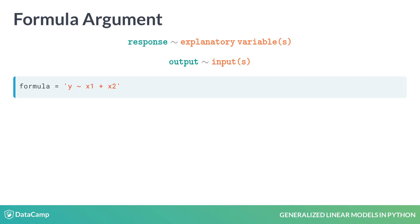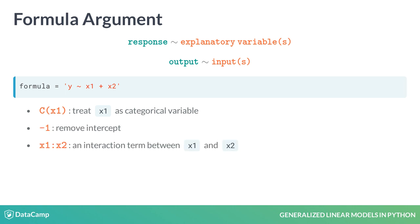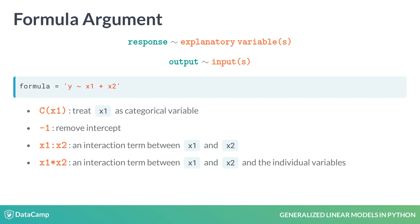There are different ways we can represent explanatory variables in the model. Categorical variables are enclosed with capital C. Removing the intercept is done with minus 1. The interaction terms are written in two ways depending on the need, where the colon applies to only the interaction term, whereas the multiplication symbol will also, in addition to the interaction term, add individual variables. We will see how this works in Chapter 4. Lastly, we can also add transformations of the variables directly in the formula.